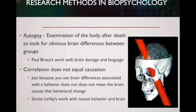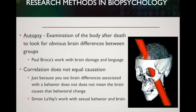Another technique is autopsy, where we examine an individual's body after death and look for any obvious brain differences. This was initially somewhat successful in giving hints about the link between brain damage and language, but nowadays the areas we're working with are very, very small, and we don't always see obvious damage related to changes in function. Just because we see a difference in a brain and a difference in behavior doesn't necessarily mean that brain area causes that behavioral change — correlational research doesn't necessarily tell us about cause-and-effect relationships.